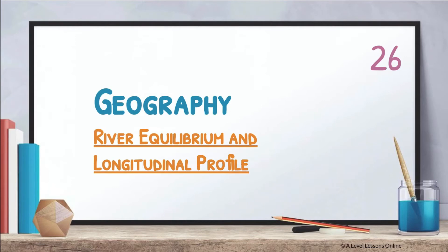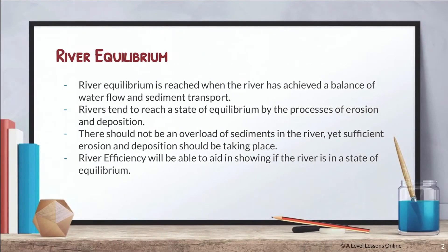Welcome back to A Level Lessons Online. This is a short physical geography video — Part 26 — covering two concepts: river equilibrium and longitudinal profile. In the previous few parts we covered channel morphology, meandering rivers, and braided rivers. This part ties everything together to understand when a river is at a stage of equilibrium and what it means for a river to have a longitudinal profile.